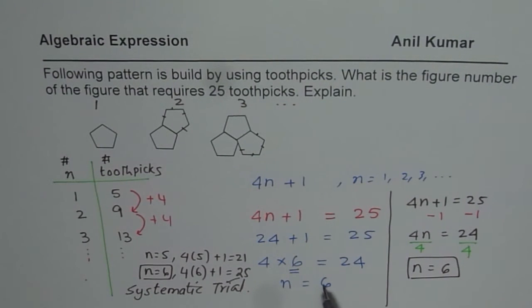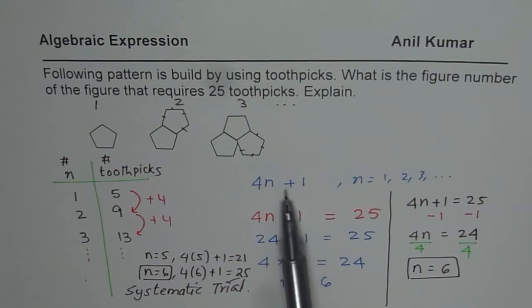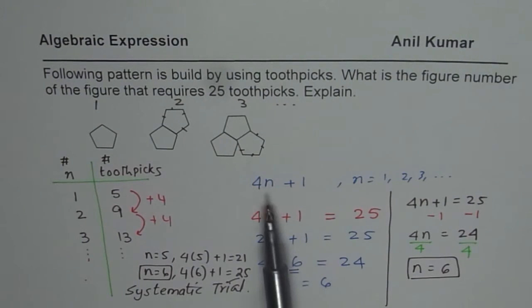So we could follow any of these methods, and that is a method by intuition. We say, well, we have something plus 1 is 25. That something should be 24. Now that something is 4 times. So 24 divided by 4 is the number. And here, we guess one number, check the value. If it is low, guess the higher number, check the value. You will get the right result at one time. And so you have the solution.